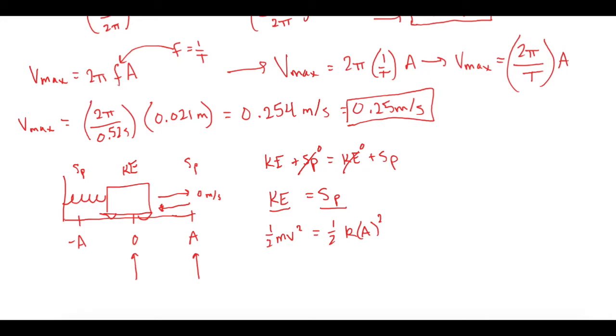So now if we do 0.5 times the mass, 0.049 kg, times the velocity, which we solved for, the v max was 0.25, that gives us kinetic energy of 0.00156 joules. Now I'm not going to do it, but if you were to plug in all the values for amplitude and the spring constant, and you plug that in, you will find that you will get the exact same thing of 0.00156 joules.